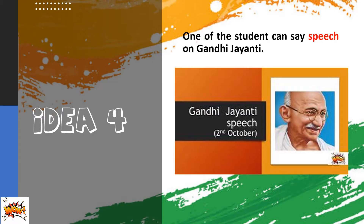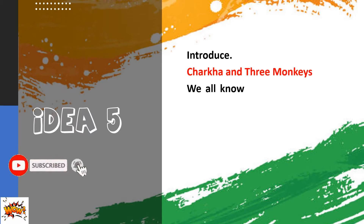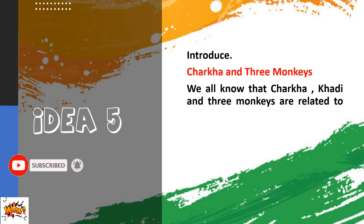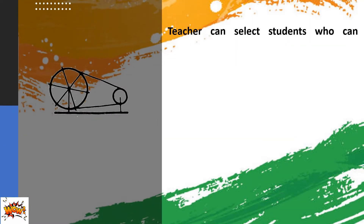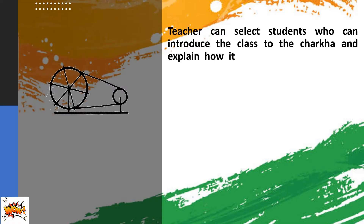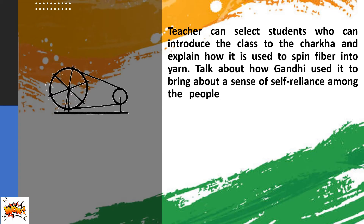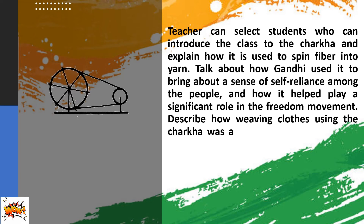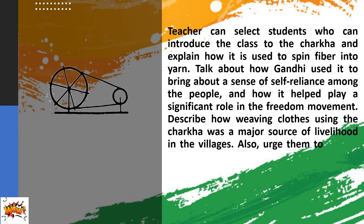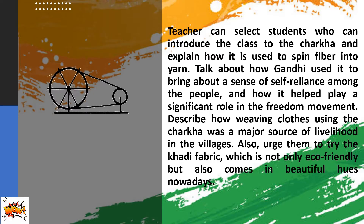Idea five: The teacher can introduce the Charkha and the three symbols of Gandhi. Charkha, Khadi, and the Three Monkeys are all related to Mahatma Gandhi. The teacher can select students to introduce the Charkha, explain how it is used to spin fiber into yarn, talk about how Gandhiji used it to bring a sense of self-reliance among the people, and how it played a significant role in the freedom movement. Students should also describe how weaving clothes using Charkha was a major source of livelihood in villages, and urge others to try Khadi fabric, which is eco-friendly and available in beautiful designs today.